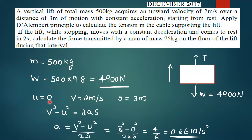Initial velocity u equals 0. Final velocity v equals 2 m per second. Distance s equals 3 m. Using v squared minus u squared equals 2as, acceleration a equals v squared minus u squared divided by 2s, which gives 2 squared minus 0 squared divided by 2 into 3, equal to 4 by 6, equal to 0.66 m per second squared.